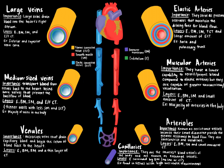Lastly, we have large veins. They are important because they empty blood into the heart's right atrium. They have an endothelium, a basement membrane, smooth muscle, as well as elastic and fibrous connective tissue. Some examples include the inferior and superior vena cava.